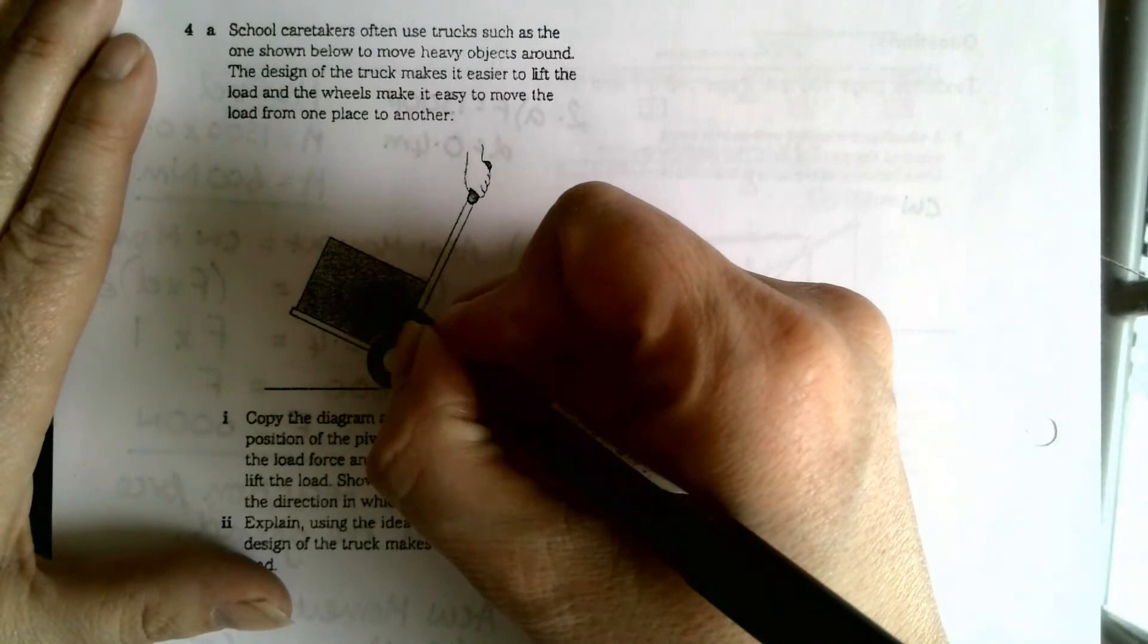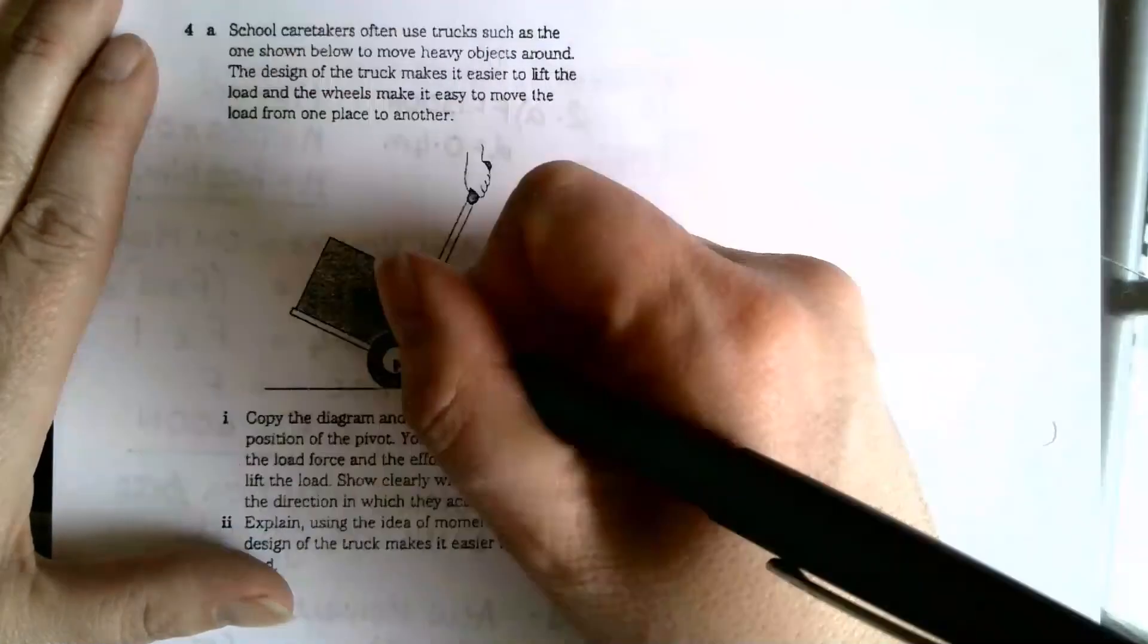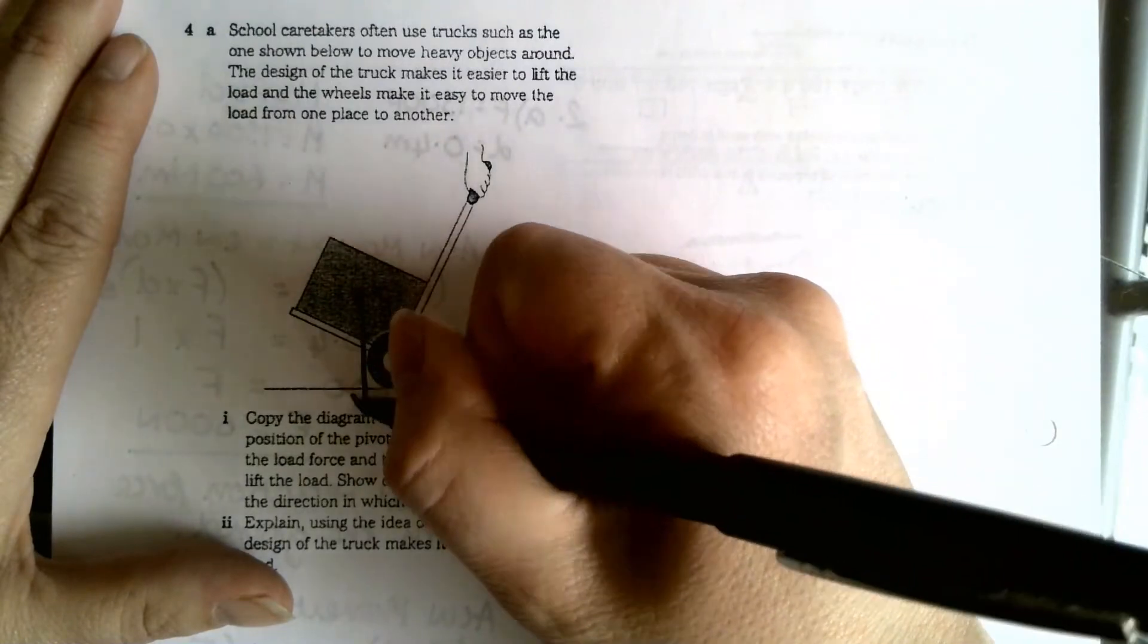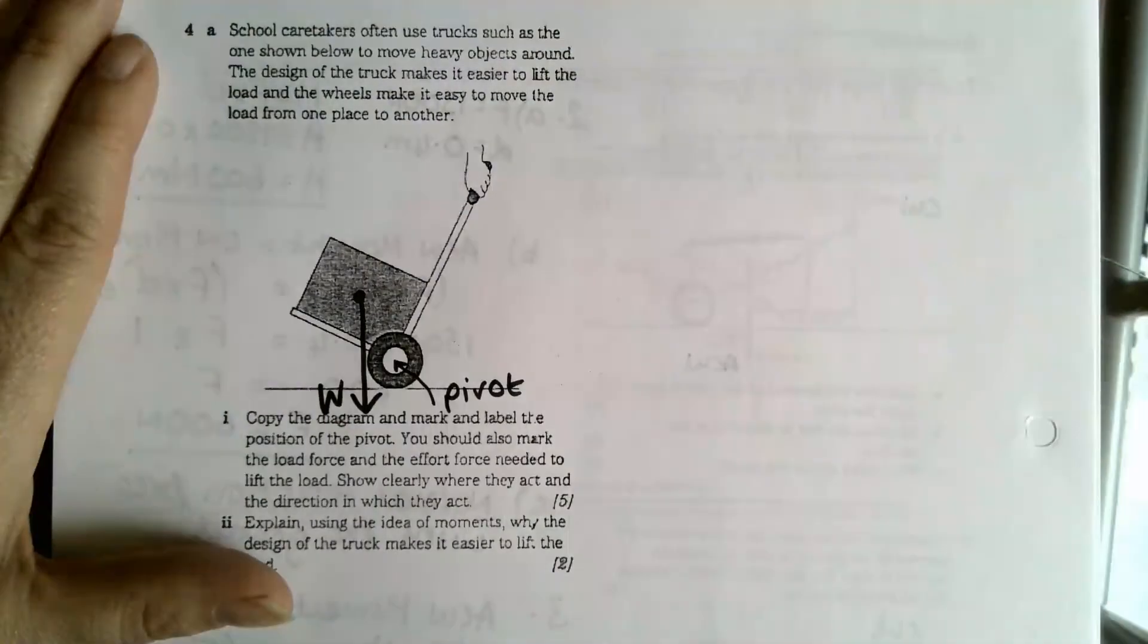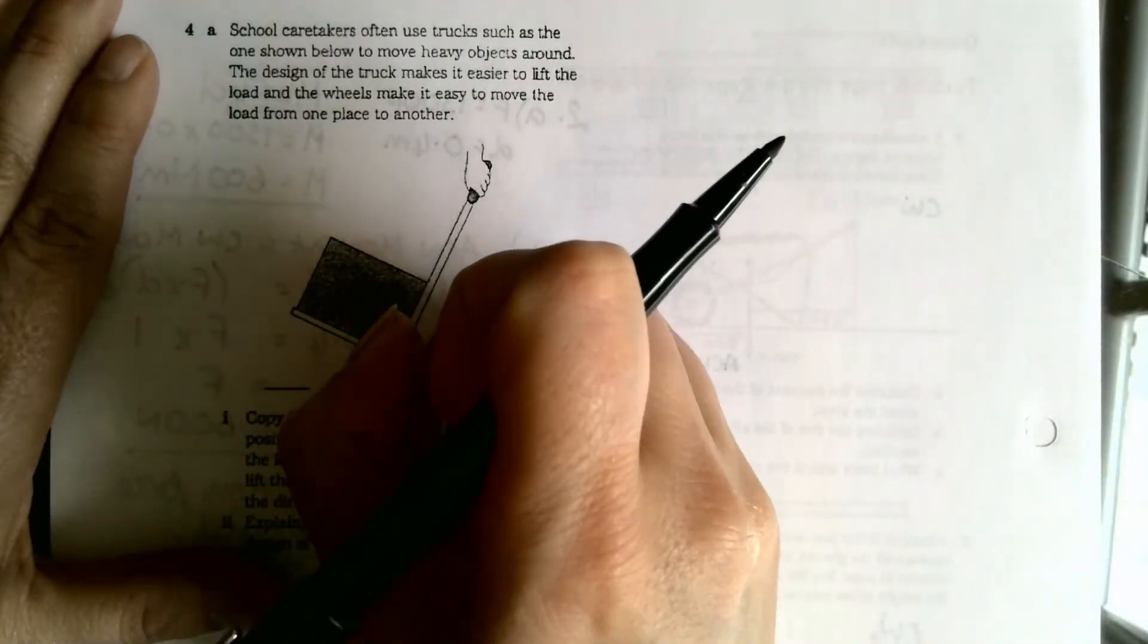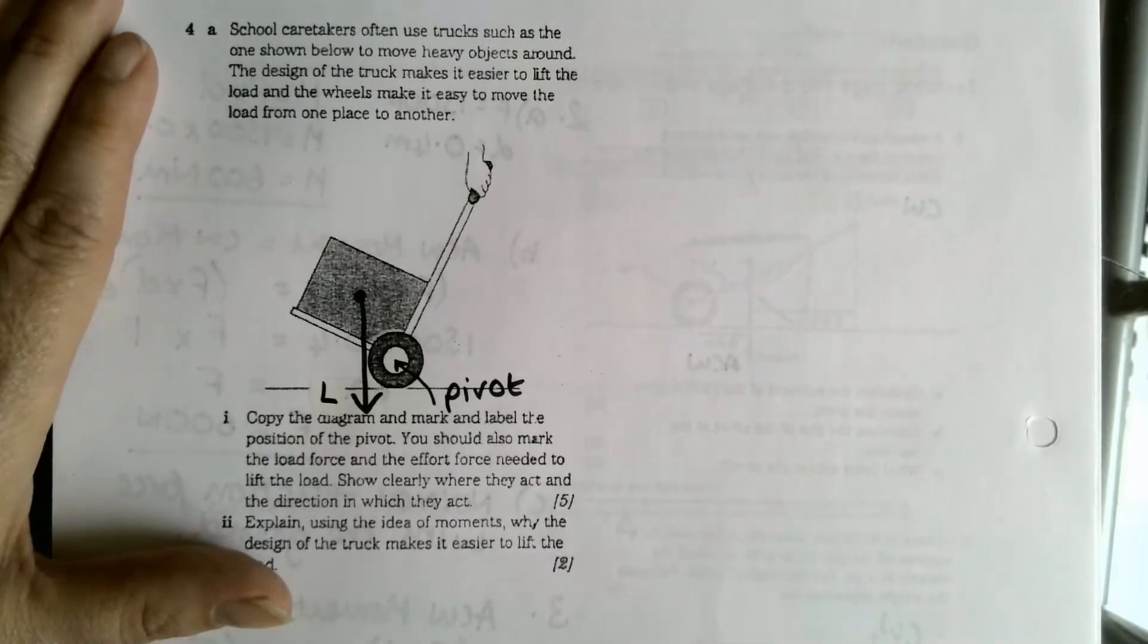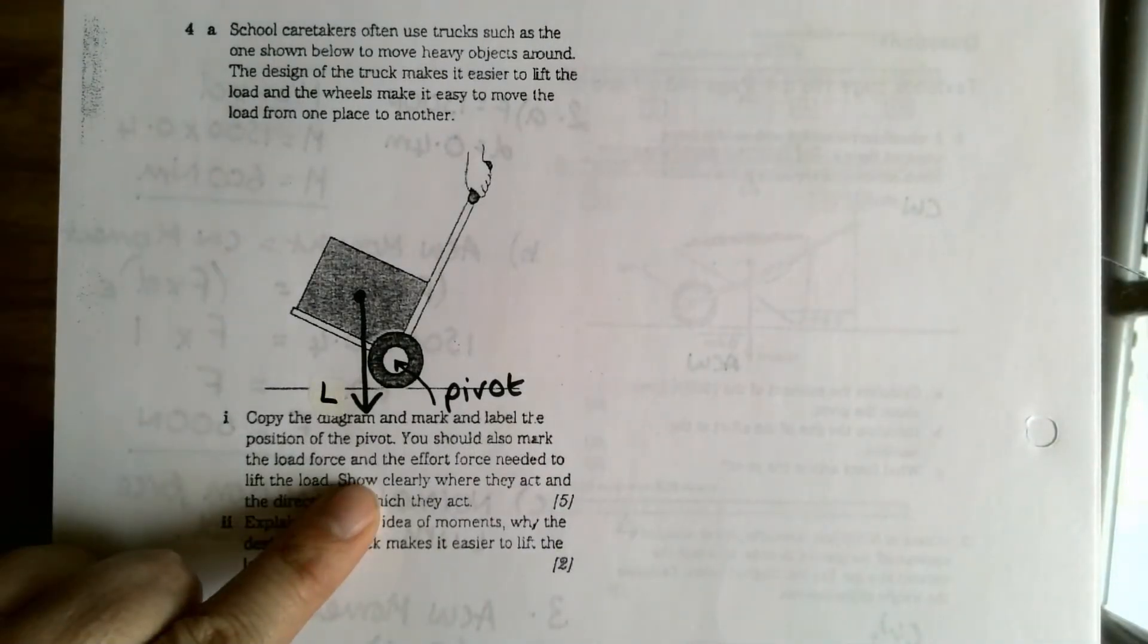Mark the load force and the effort force needed to lift the load. So the load is going to be this bit here, and if you're ever marking on the diagram, mark forces in the direction that they are acting in. So the weight of this is going to act from its center of gravity, so I would mark it on from that point there. Oh, dodgy line. And that's the weight. Oh hang on, they've asked us to label it as load, so I'm going to change that to an L.